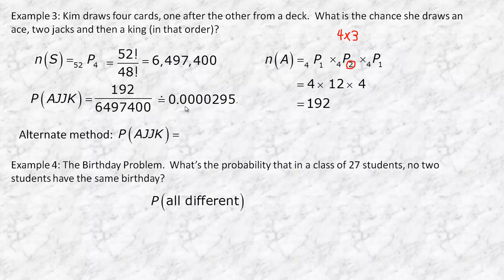So that's why this is twelve. And then the four permute one, the king in the end, is four again. So four times twelve times four is 192. And so the probability that she gets an ace, two jacks, and then a king would be 192 out of this about six and a half million number. So it's pretty small, 0.00002955.